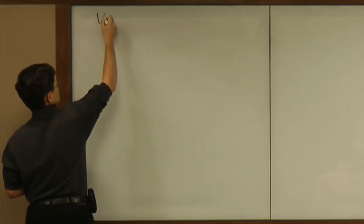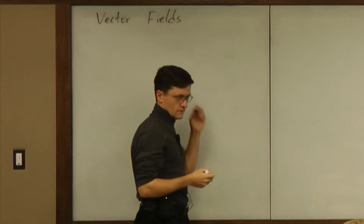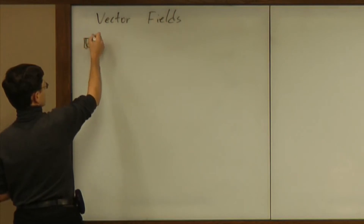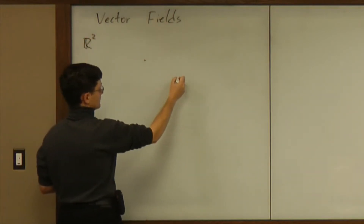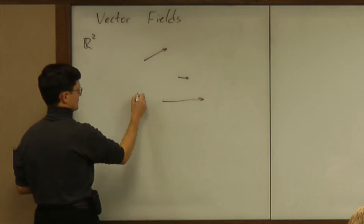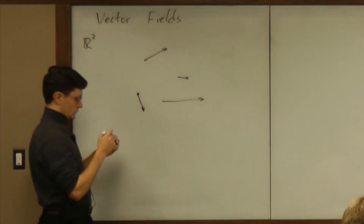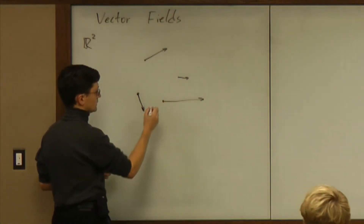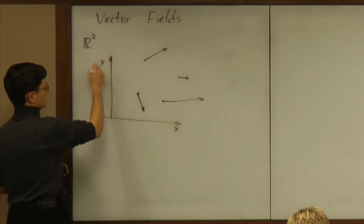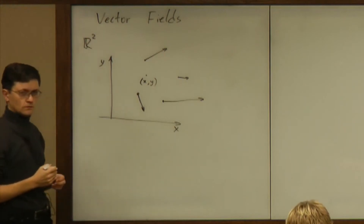I'll start a new topic of vector fields. Everything will be on a plane. The vector field is an assignment of a vector to every point of a plane. A way to describe that algebraically is to introduce a coordinate system on a plane, and then each point gains two coordinates x and y.